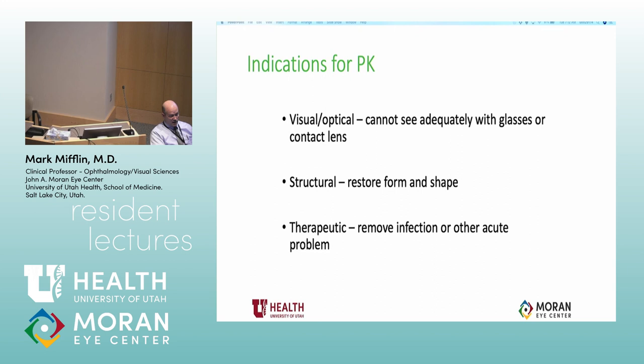Things like edema also block vision. Structural indications refer more to shape problems, or could refer to trauma, infection, or perforation. Therapeutic transplant is the least commonly performed — it would be for an infection that can't be controlled, where you might cut it out before it spreads. And sometimes just tectonic, to restore the globe, possibly as a temporary measure, like a patch graft for a rheumatoid melt.